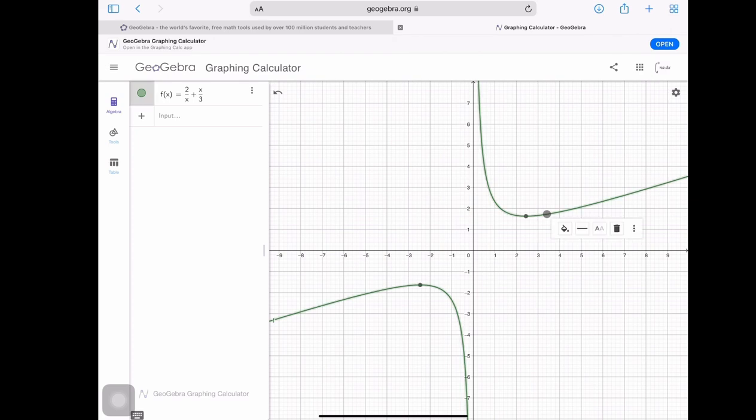And you notice the dots went away, but if I tap the function, the dots come back. Those dots are extreme values. So here is a local maximum. Let's see what that is. When x equals negative 2.45, our graph reaches a local max of negative 1.63. And here we have a local minimum. When x is equal to about 2.45, our graph has a local minimum of 1.63.